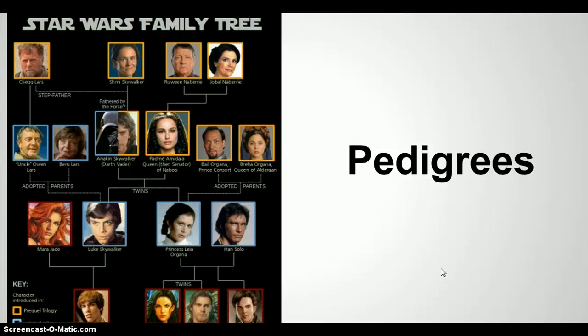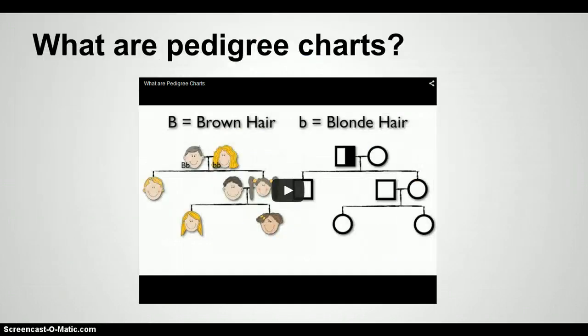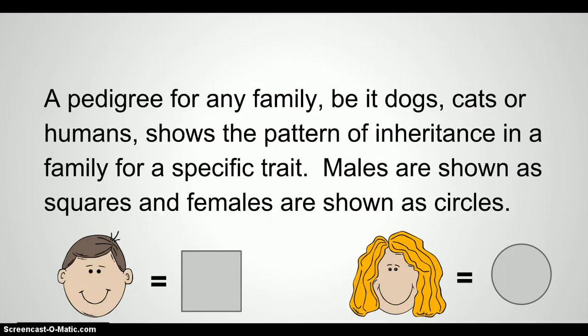There are a few tricks that I found useful when presenting this slideshow. I start by showing the Star Wars family tree and the Harry Potter family tree, then ask what do these lines represent. Obviously the answer is some kind of relationship. I then play the movie which shows how the family tree becomes a pedigree chart, and reinforce what was shown in the video in the next couple of slides.